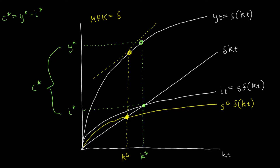To summarize: suppose policymakers want to choose a savings rate that maximizes consumption. If we are sitting at a steady state where the savings rate is too high, the condition MPK equals delta is not met — at that point, the marginal product of capital is actually less than the depreciation rate, due to diminishing returns to capital. Lowering the savings rate increases the marginal product of capital, and eventually, by choosing S_GR, we reach the golden rule steady state that maximizes consumption.